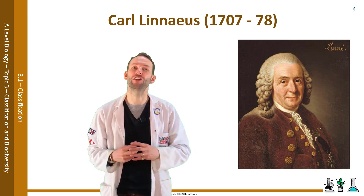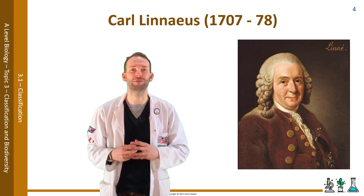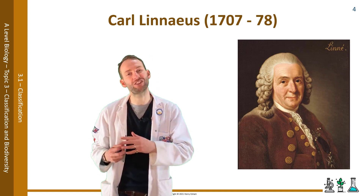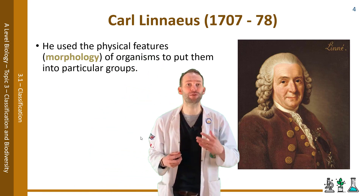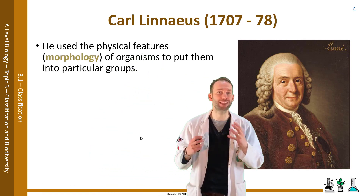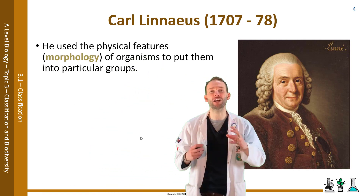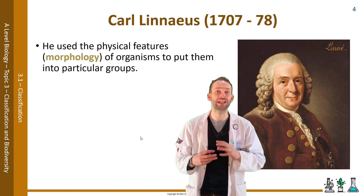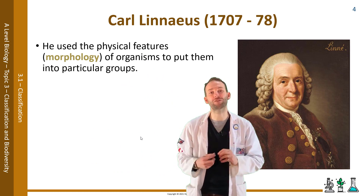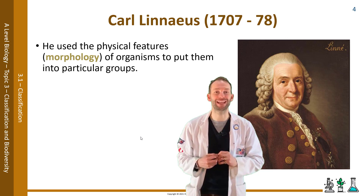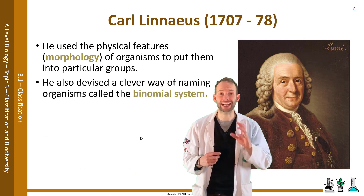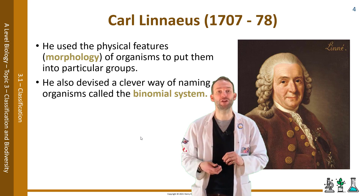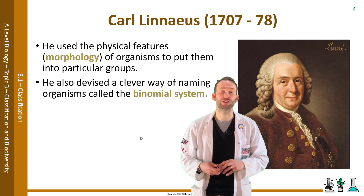Carl Linnaeus is the godfather of taxonomy, which is the science of classification. He used the physical features or morphology of organisms to put them into particular groups. He devised a hierarchical structure for classification which is still used today, but has just been slightly modified and updated. He also devised a clever way of naming organisms called the binomial system, which we also still use.